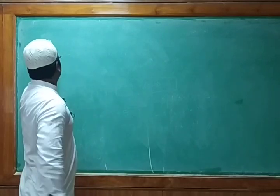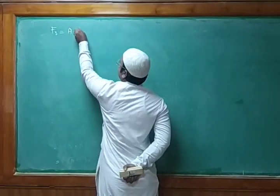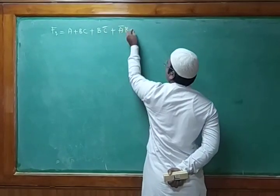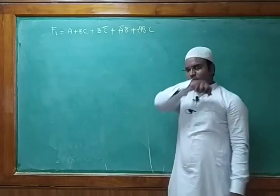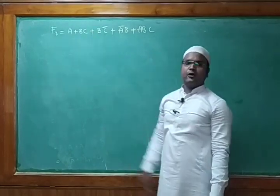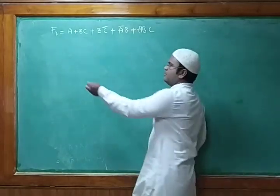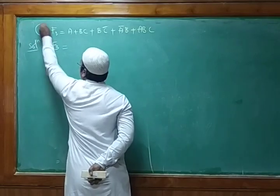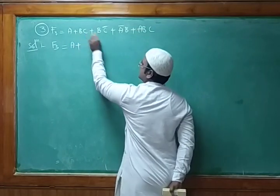Now the next problem: F3 = A + B·C + B·C̄ + Ā·B + A·B·C. Check for any repeated terms. Looking at B·C̄ and B·C, B is common in those two. Also, Ā·B and A·B·C both contain B, so B is common in multiple terms. So we can take B common in different groupings.